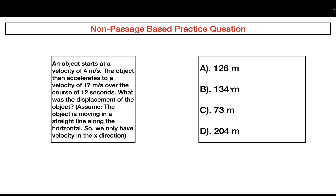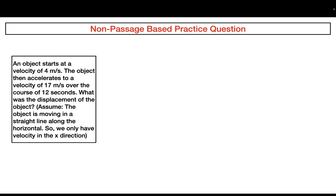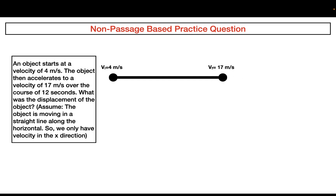The correct answer is choice A. To visualize this problem, let's draw a diagram with two points on a line. The starting point has VI equals four meters per second, and at the ending point the final velocity is 17 meters per second. This took place over 12 seconds, so T equals 12 seconds. What we're trying to find is the displacement of this object.